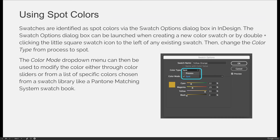Swatches are identified as spot colors via the Swatch Options dialog box in InDesign. The dialog box can be launched when creating new color swatches or by double-clicking the little square swatch icon to the left of any existing swatch. Then change the color type from process to spot using the drop-down menu. As soon as you identify it as a spot color, it communicates that you should purchase that specific color of ink when printing, as opposed to creating that color from a process blend of cyan, magenta, yellow, and black.